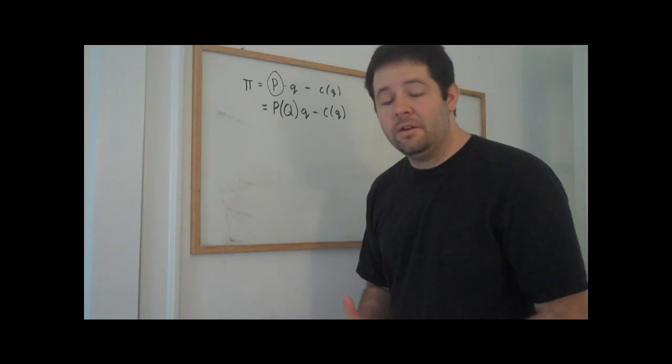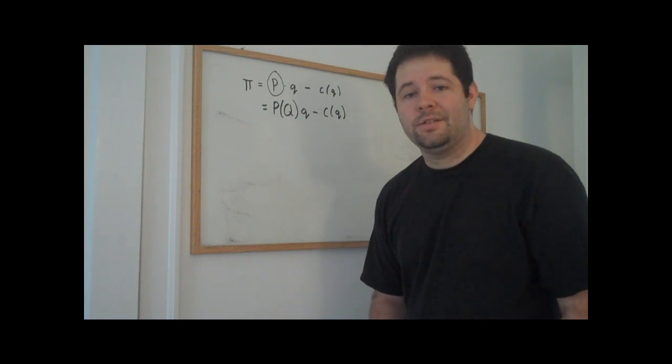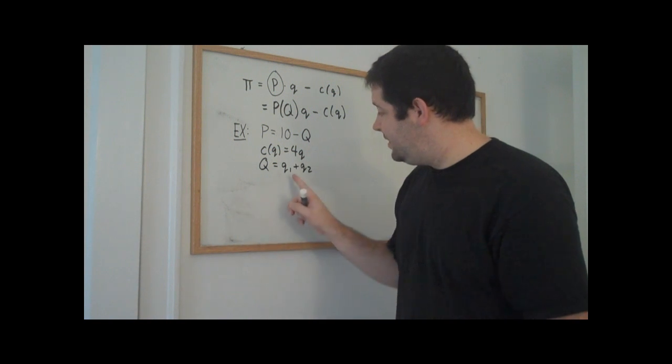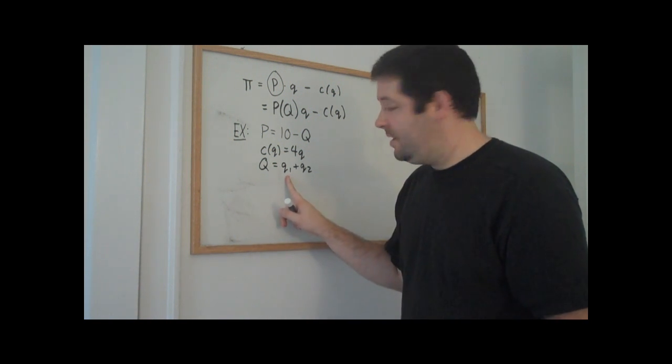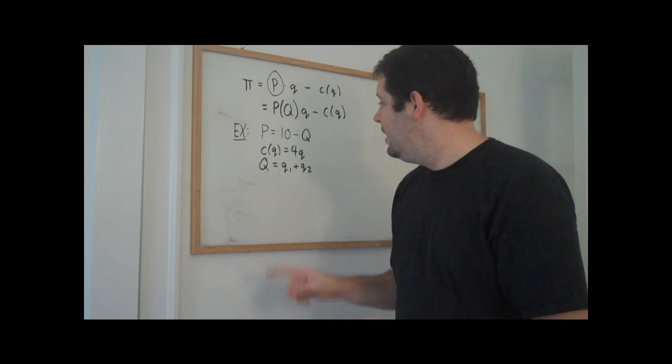Let's take an example of a linear demand curve where we have two firms and constant marginal costs. The big Q is going to be the sum of the individual quantities of each of the firms. I've labeled the quantities Q1 and Q2 for firm 1 and firm 2.